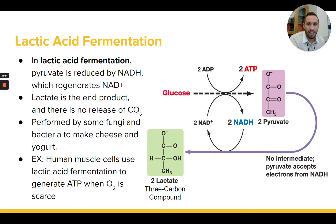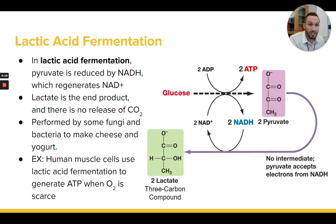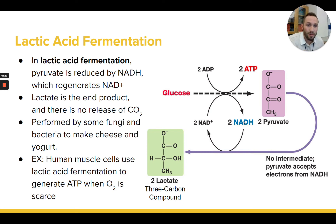Let's look at lactic acid fermentation first. There are two types: lactic acid fermentation and alcohol fermentation. In lactic acid fermentation, you're going to have glycolysis — glucose turns into two pyruvate molecules, making a net of two ATP and producing two NADHs. The problem is if you're just doing glycolysis and the pyruvate is not going to the mitochondria because there is no mitochondria or there's no oxygen available, and you're just going to continually repeat glycolysis, you're going to end up running out of NAD+.